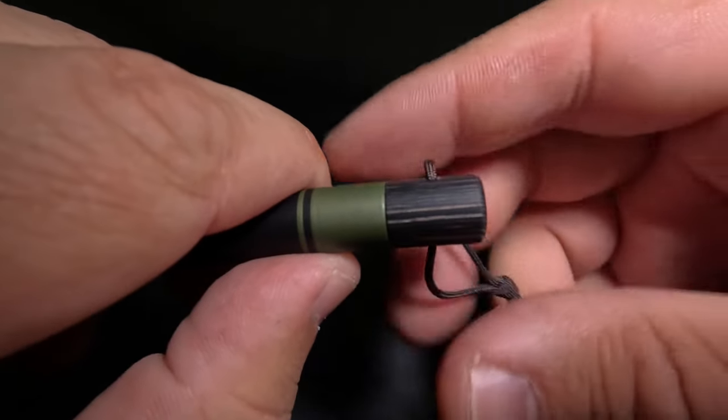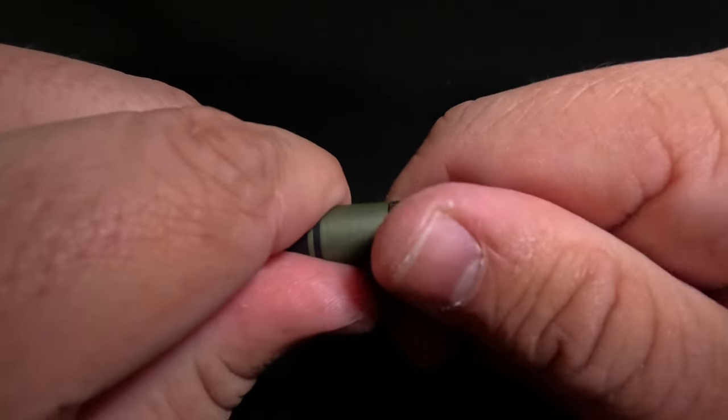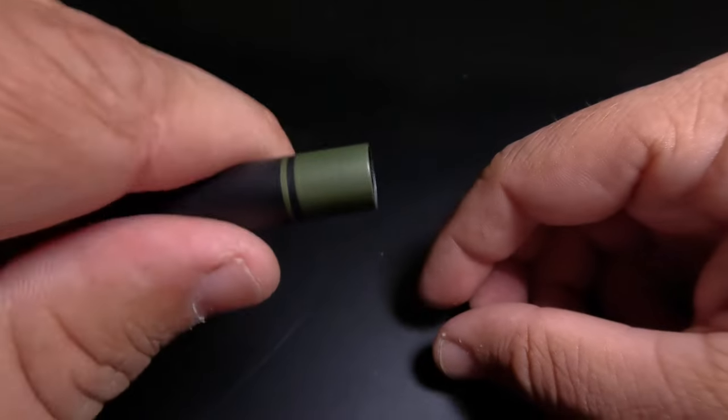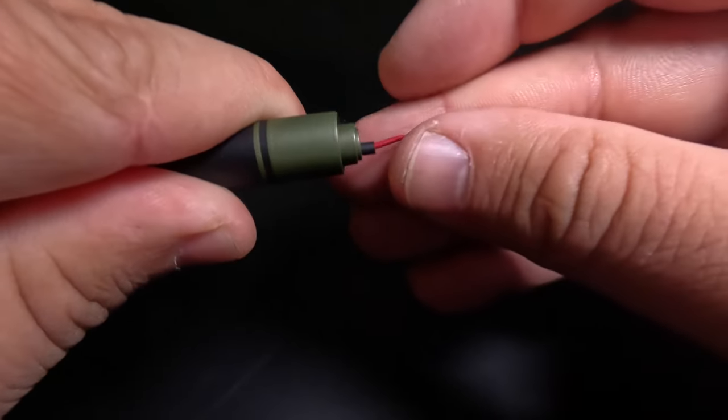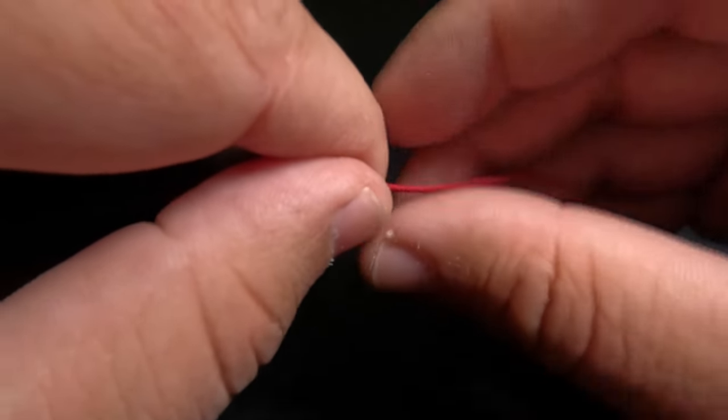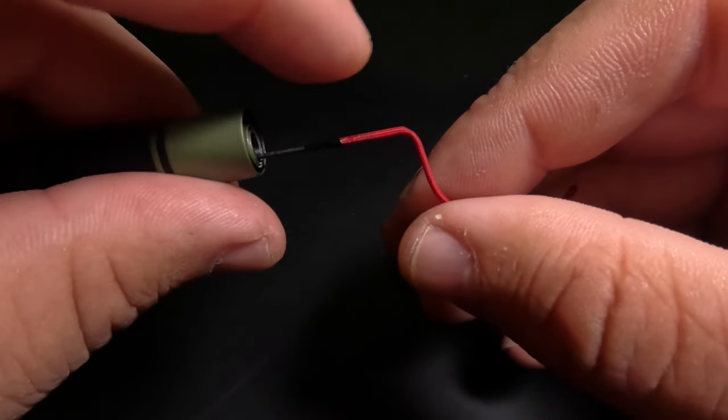So to get started, we first want to remove the tip plug from the Tenkara rod. The next thing we want to do is expose the Lillian, which is a super tough piece of fabric which is fused to the tip section of our Tenkara rod.